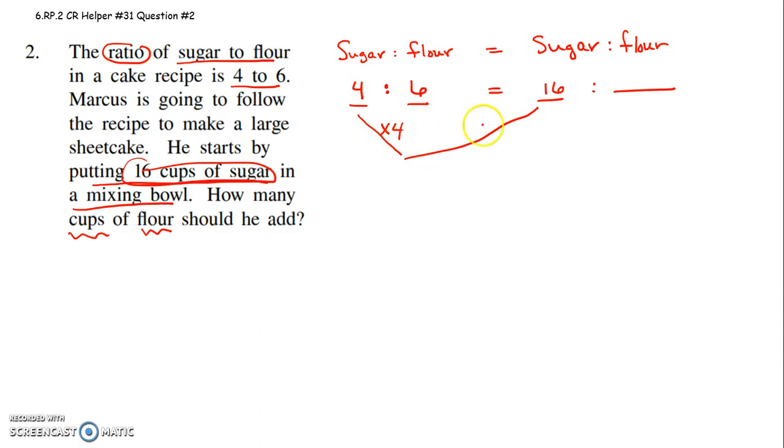Well, if I have to multiply four by four to get 16, then I also have to take four times the amount of flour. If I need four times the amount of sugar, I need four times the amount of flour. Six times four is 24. So they must need 24 cups of flour.